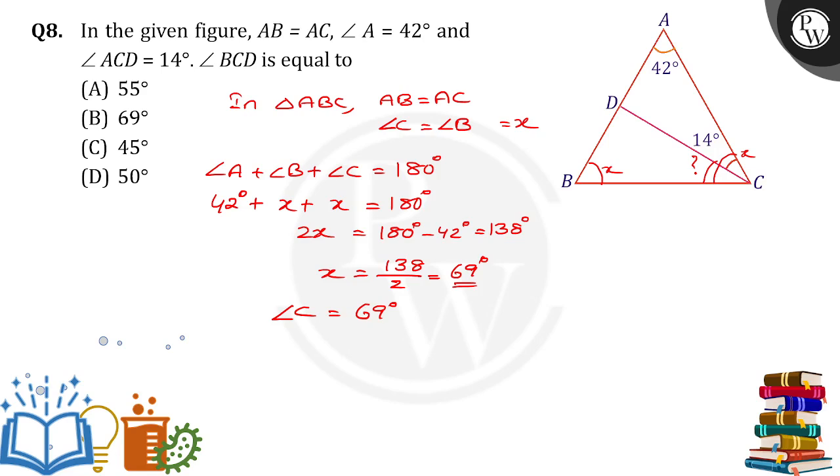Angle C was divided into two parts. What are the parts? Angle ACD plus angle BCD equals 69 degrees. ACD is given as how much? 14 degrees.